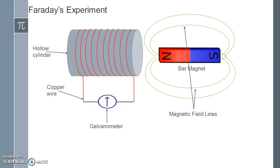Faraday performed an experiment in which he took a hollow cylindrical object onto which he wound the copper wire as shown. The two ends of the copper wire are connected to galvanometer which deflects when the current is flown through it. Then, Faraday brought a bar magnet near to this apparatus.